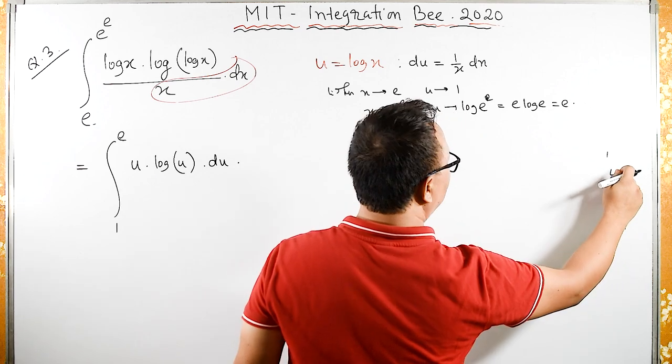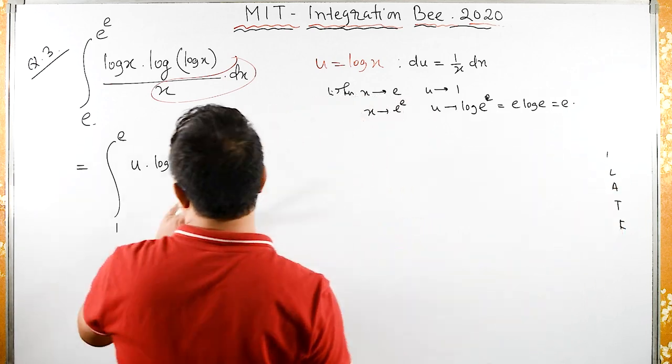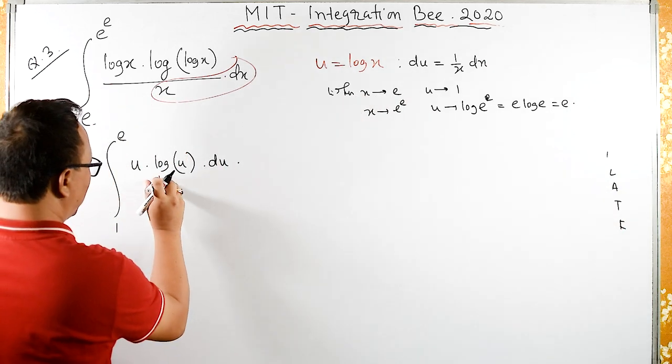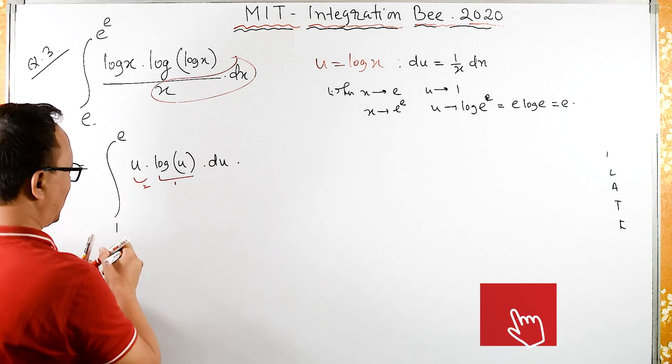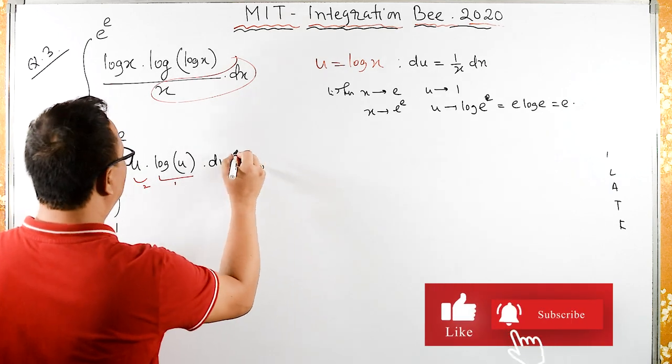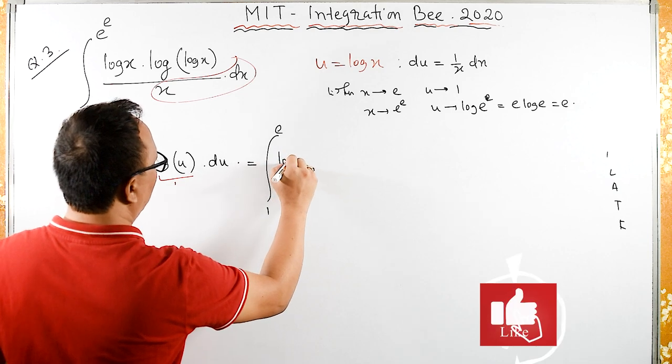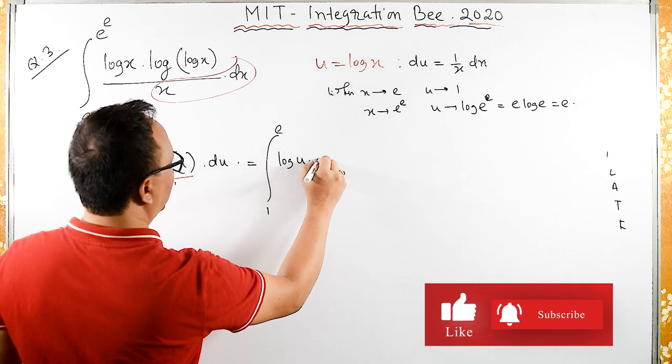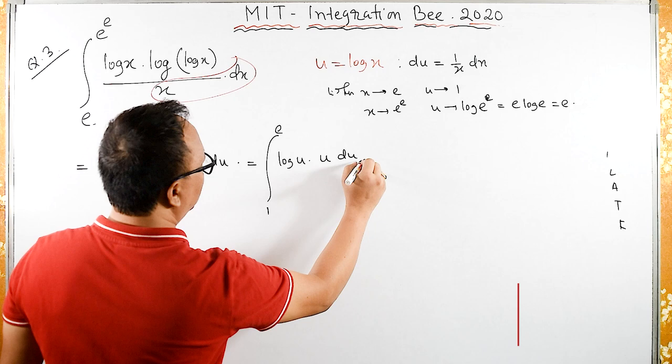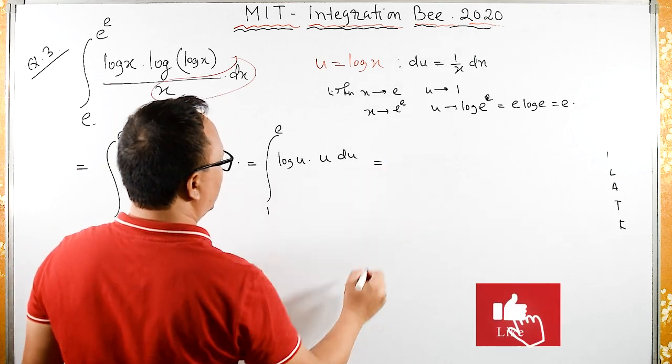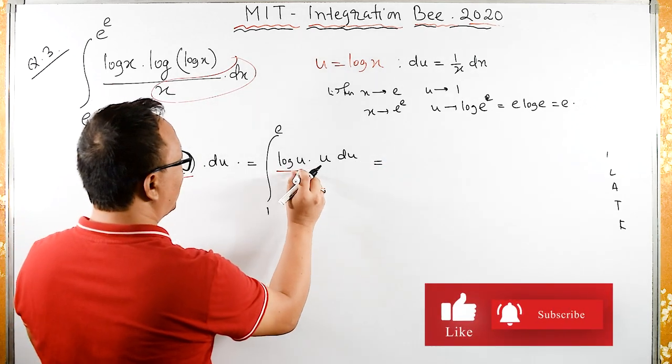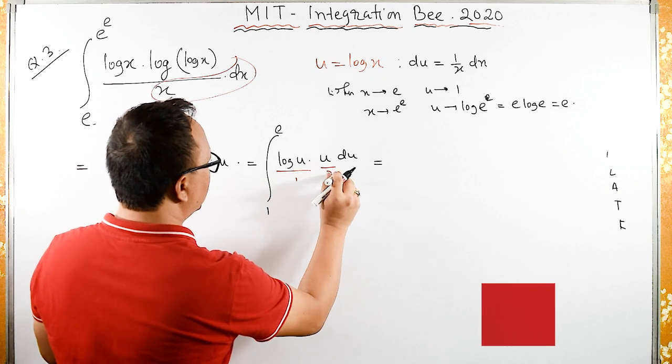We have logarithmic and algebraic functions. I will choose log u as the first function and u as the second function. So from 1 to e, integral of log u times u du.